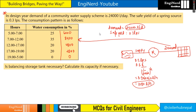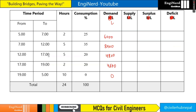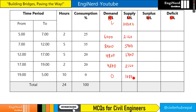For the supply part, it will be 1080 liters per hour multiplied by the time in hours. So for the first period: 1080 × 2 = 2,160 liters. The second period: 1080 × 5 = 5,400 liters. Again 5,400 liters because the time is the same. Then 2,160 liters, and for the last 10-hour period: 1080 × 10 = 10,800 liters.